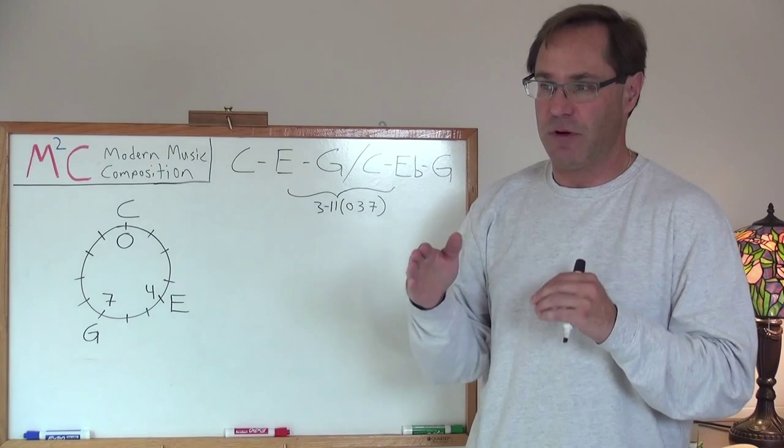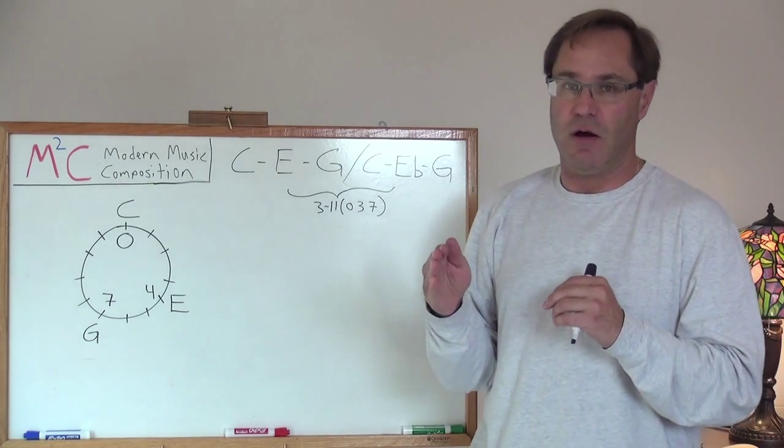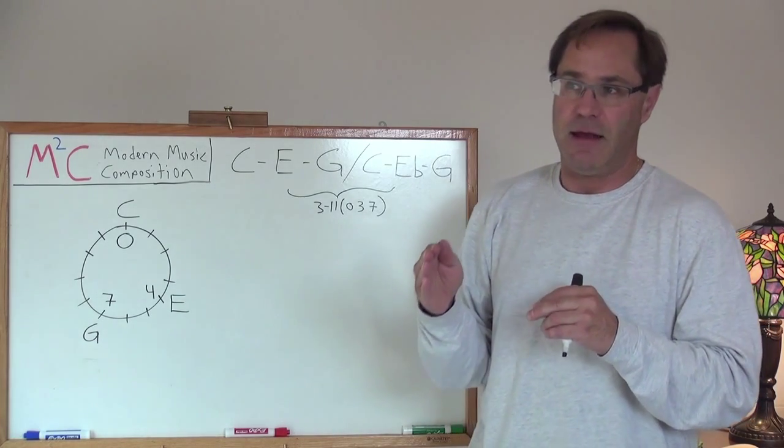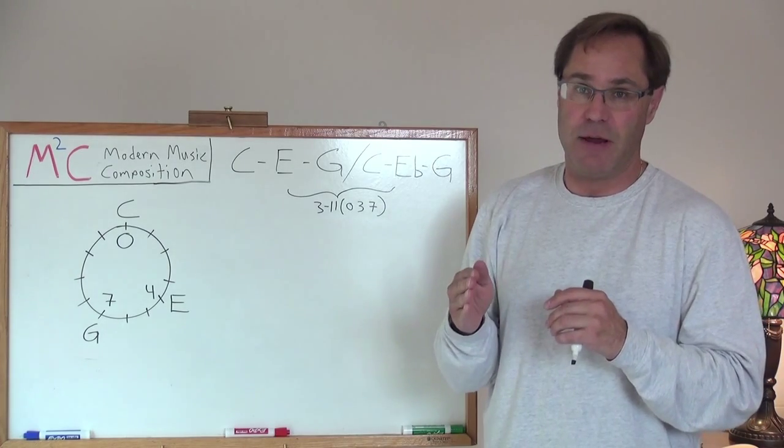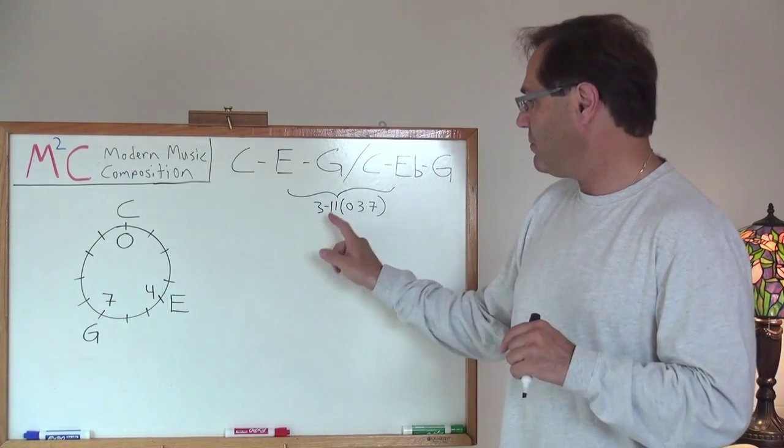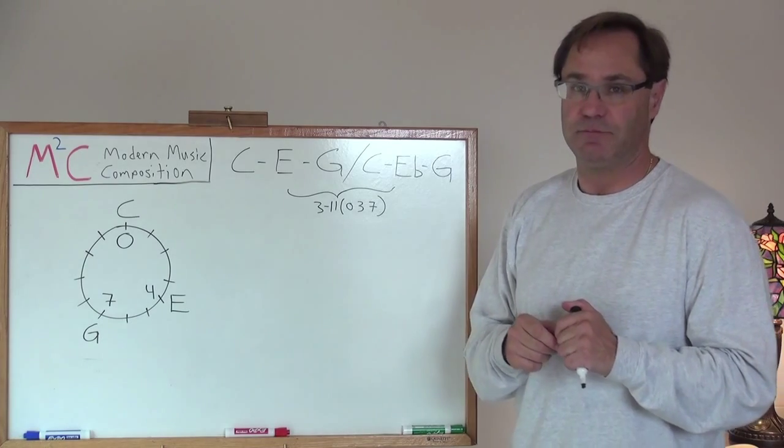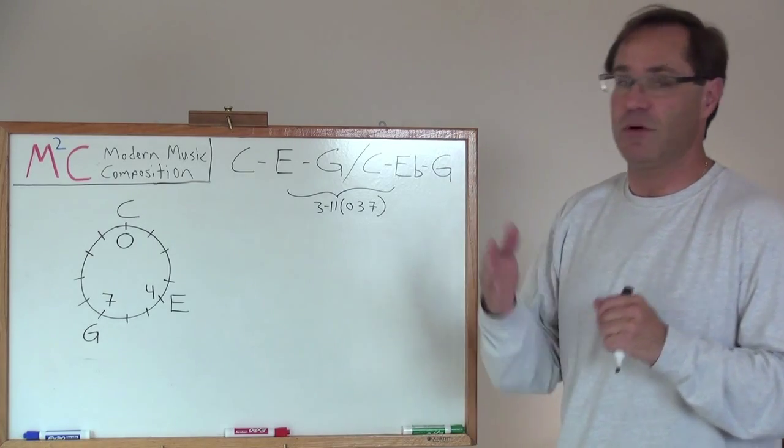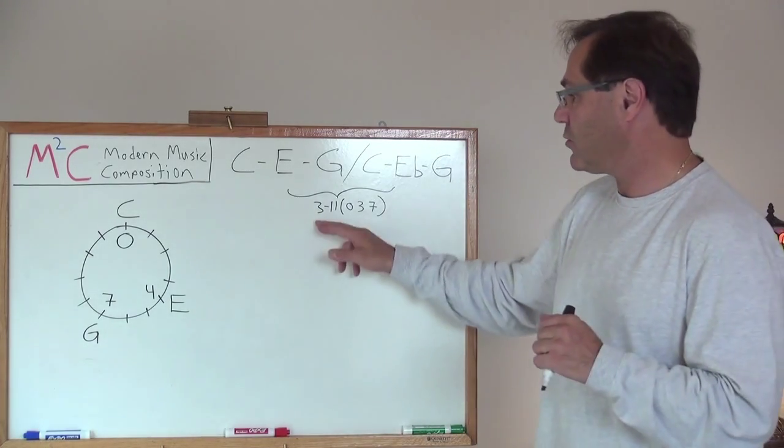Then I touched briefly, once again, upon set theory, and I gave an example of major and minor triads, that they were both part of set 311, in terms of what set class they're associated with 311.